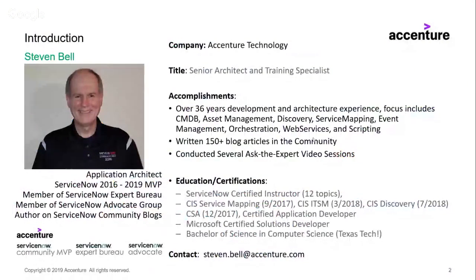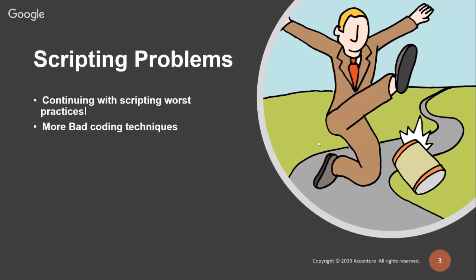For those who don't know me, my name is Steve Bell. I am an MVP for the last four years, a member of the expert bureau, the advocate group, and an author on the community blogs — I've got over 150 articles and a number of videos. Most of these worst practices, if not all of them, come from live production code pulled from implementations I've seen out in the wild at various customer sites.